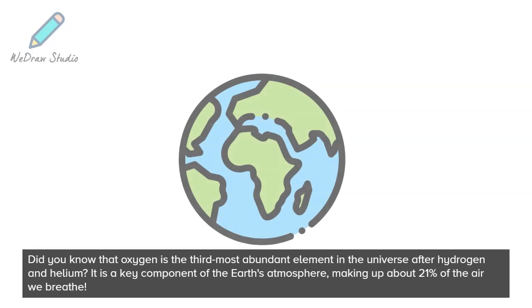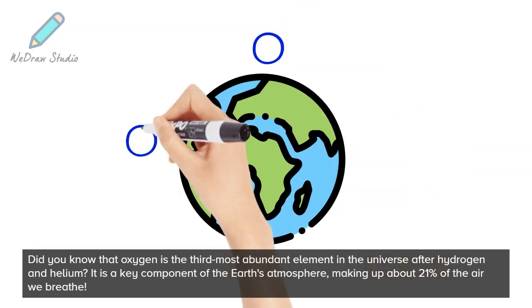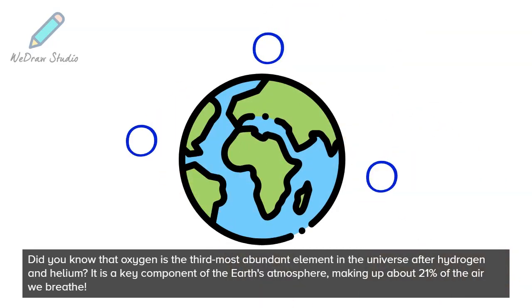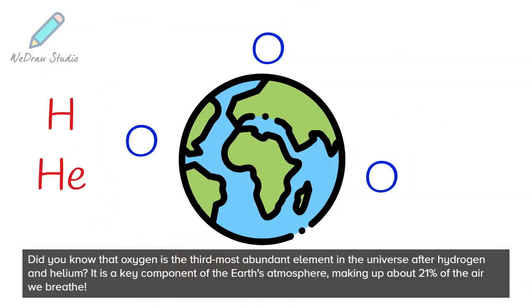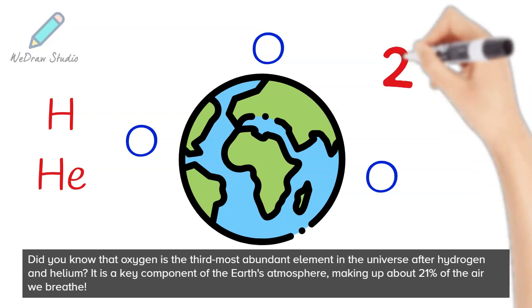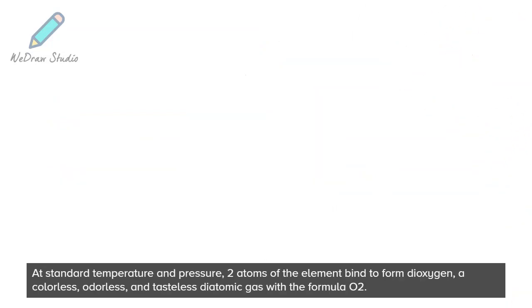Did you know that oxygen is the third most abundant element in the universe after hydrogen and helium? It is a key component of the Earth's atmosphere, making up about 21% of the air we breathe.